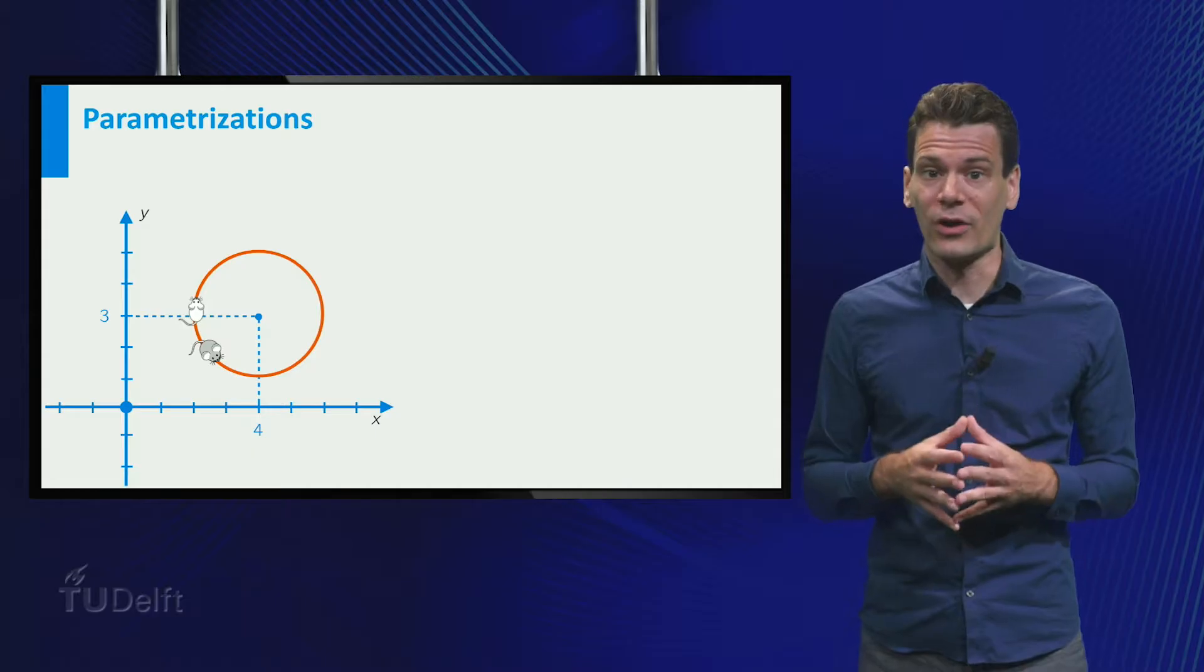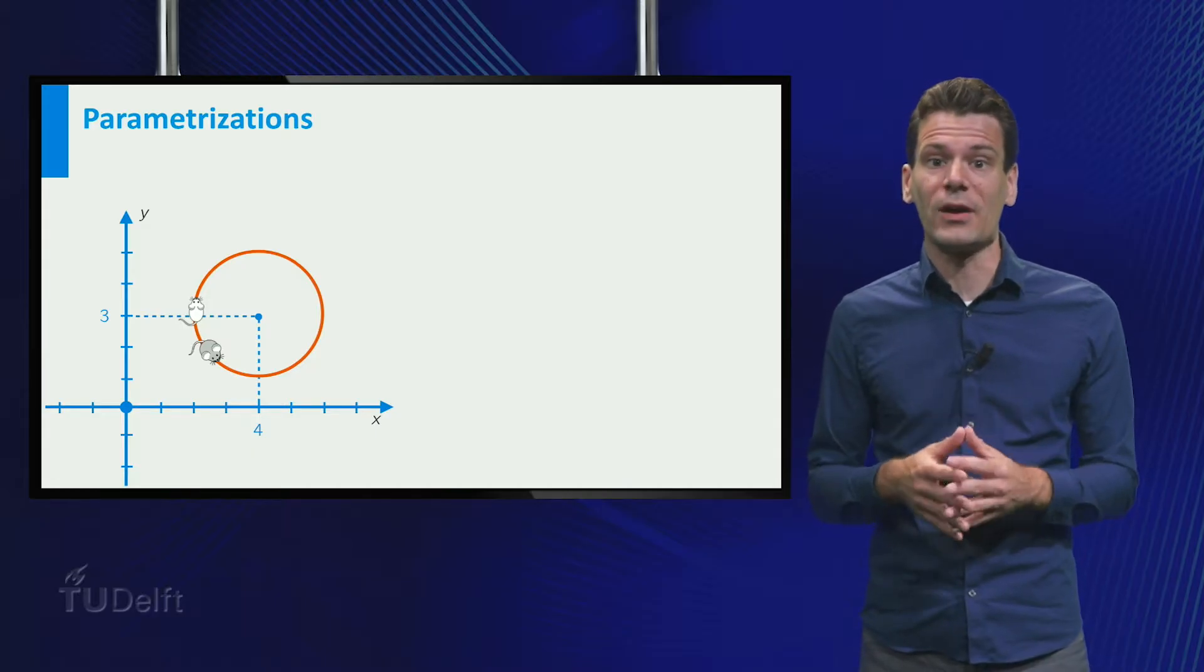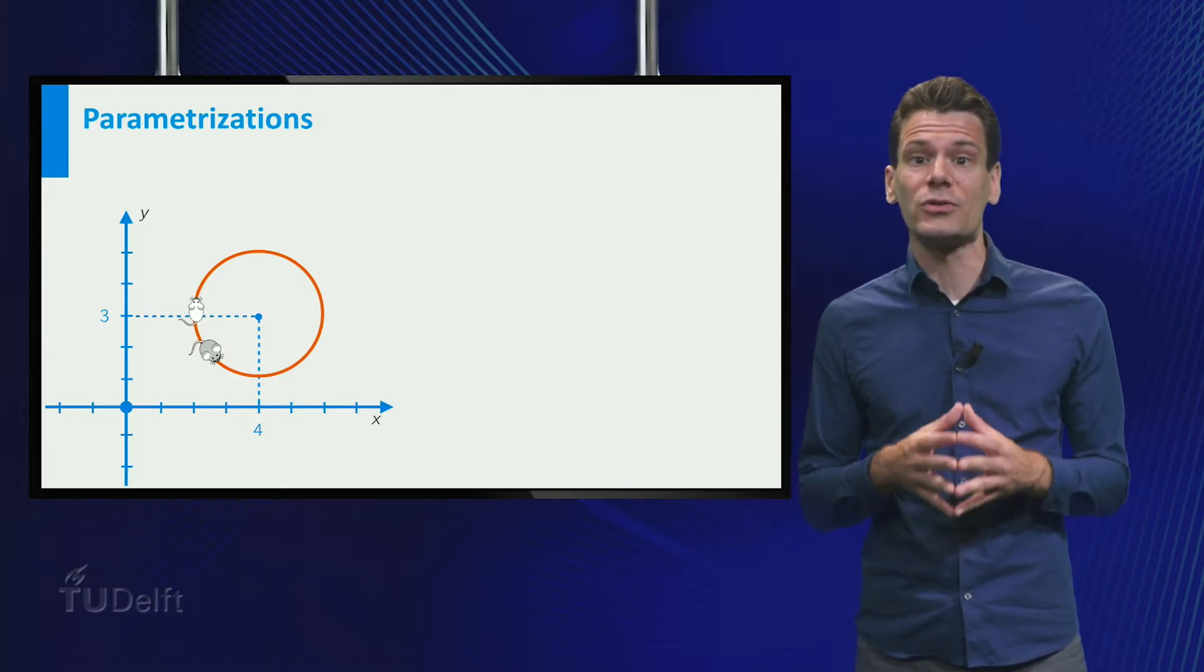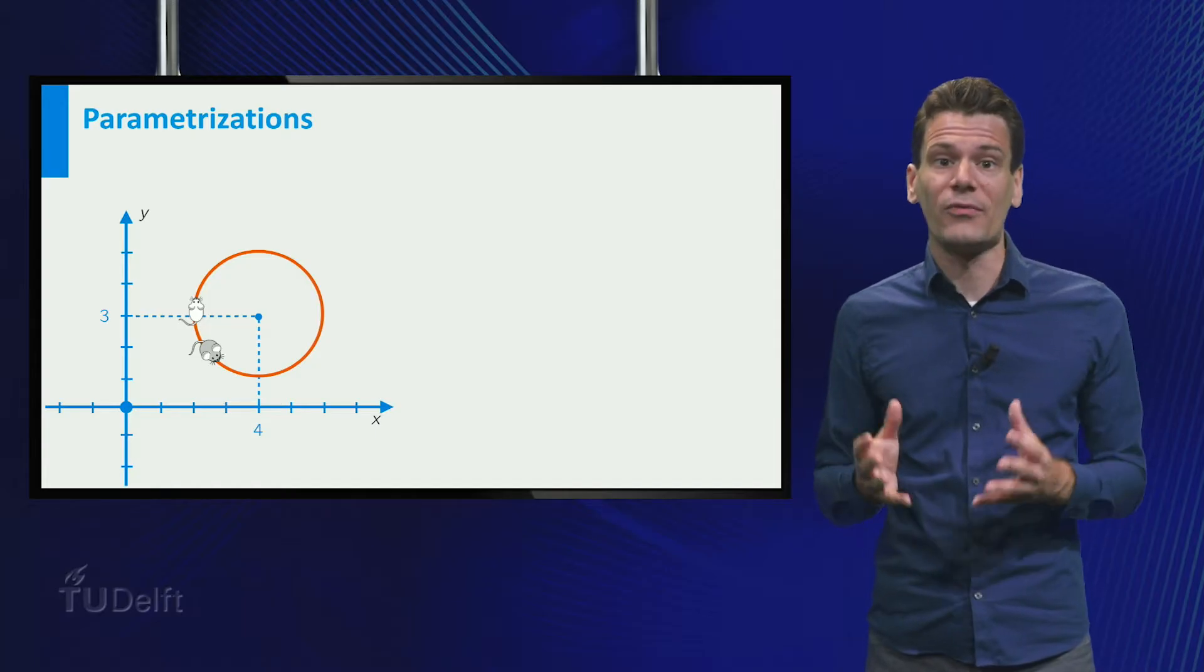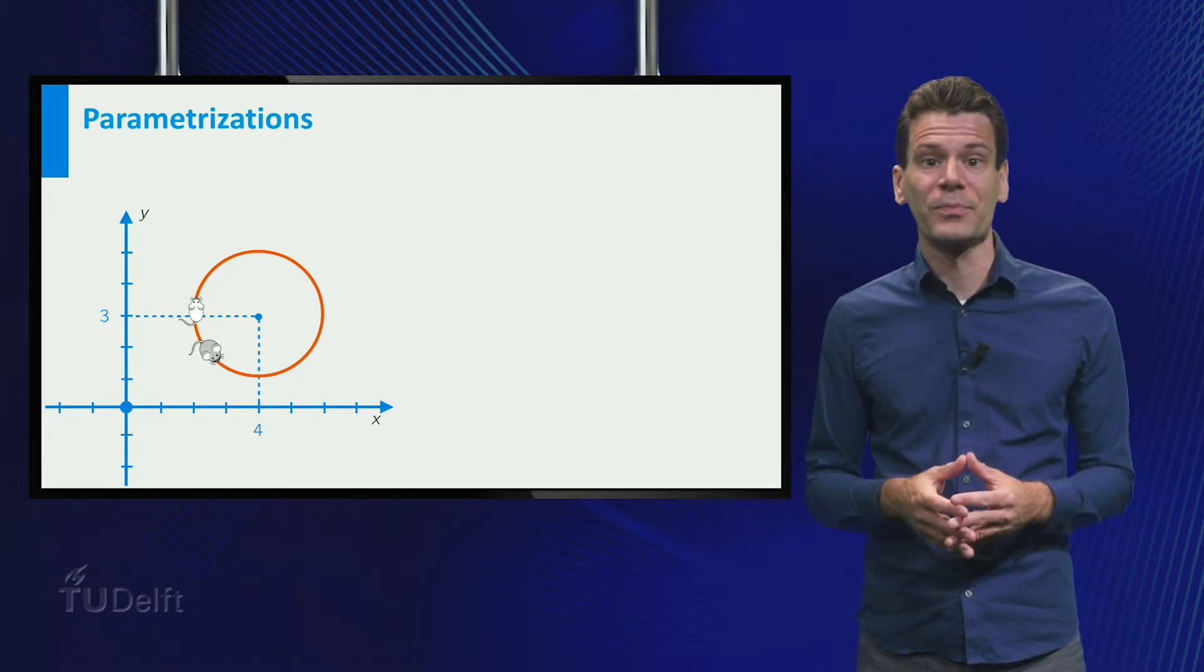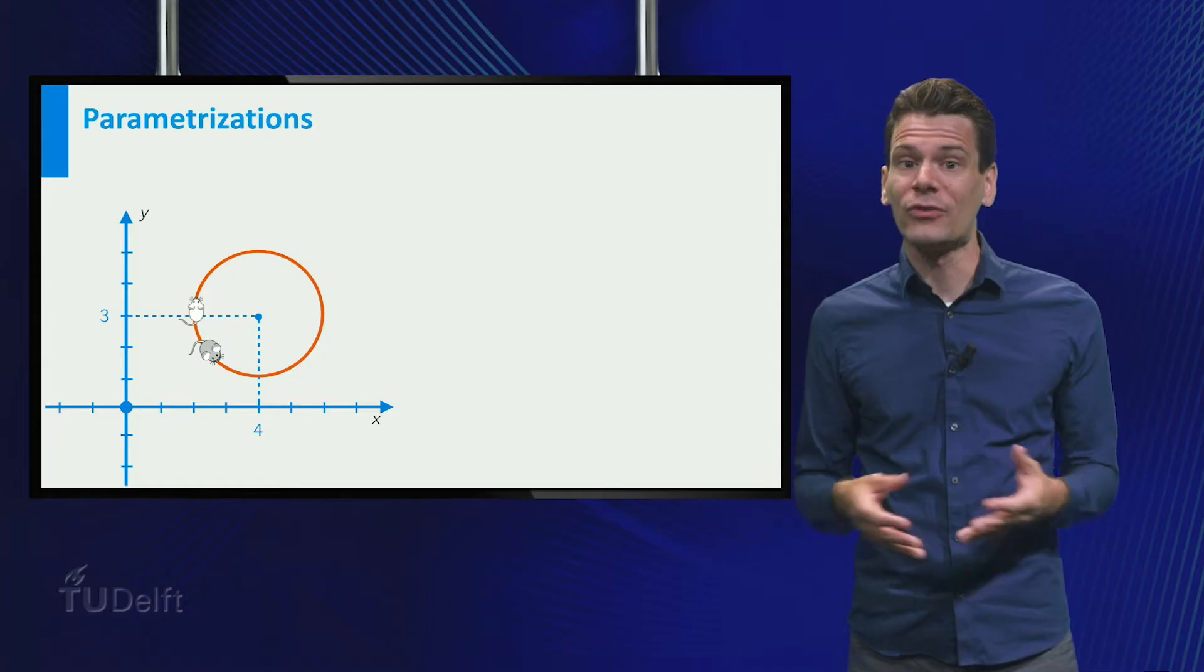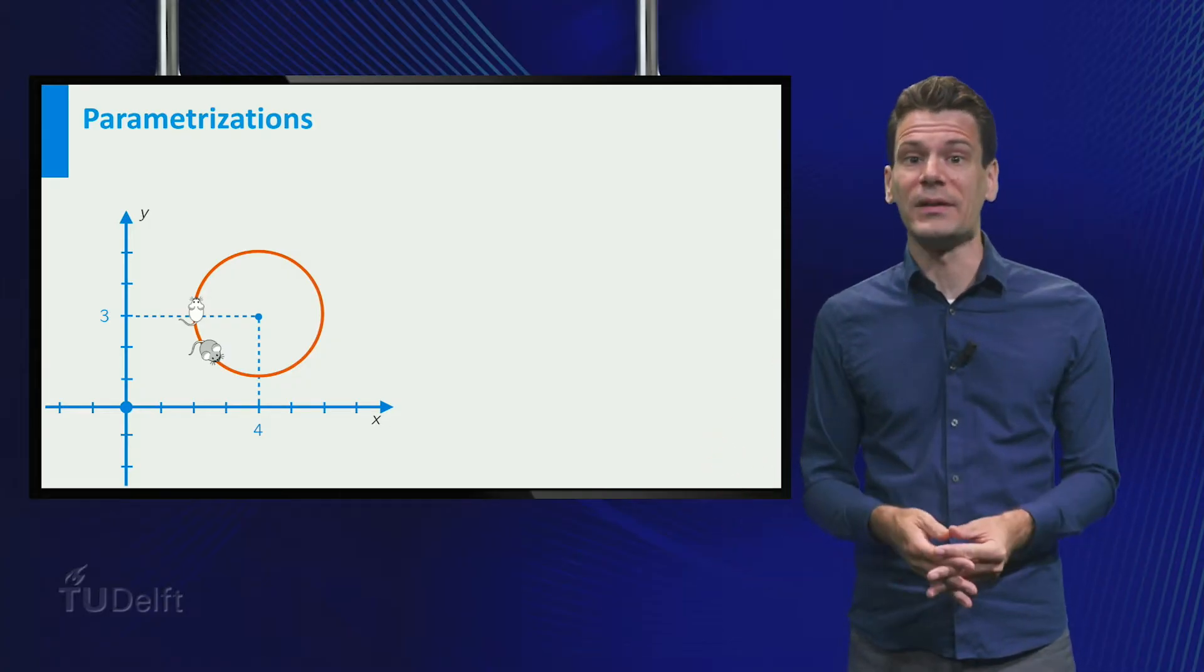The corresponding coordinate functions and the parameter interval for the grey mouse are completely different from those of the white mouse, but both provide a parametrization of the curve. Actually, given the curve, there are infinitely many parametrizations that describe it.